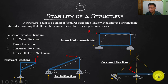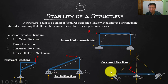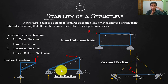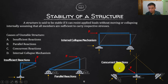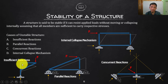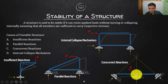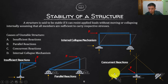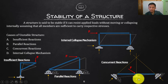The third cause is concurrent reactions — all reactions meet at a single point. Even if there are three reactions (sufficient in number) and they are not parallel, if all their lines of action pass through the same point, the structure is still unstable. A purely vertical load may be fine, but an inclined external force will cause the structure to rotate about that concurrent point and collapse.